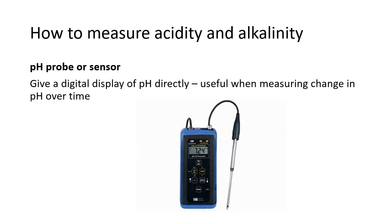For even more accuracy, you can use a pH probe or sensor — you place the probe in your solution and on the screen it gives a reading of pH. That gives an even more accurate reading than universal indicator because the results are usually within two decimal places. This is especially useful when doing experiments where the pH changes over time, such as a titration.